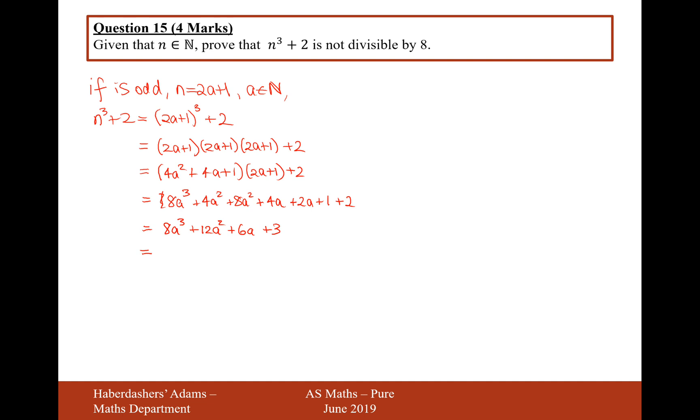Now, it's not looking simple to prove this is not divisible by 8, because I can't easily factorize out an 8. But what I could do is factorize out a 2. This gives us 2 times (4a cubed plus 6a squared plus 3a plus 1) plus 1. What I've clearly shown here is that this is an odd number, because it's 2 times something plus 1. And an odd number can never be divisible by 8.